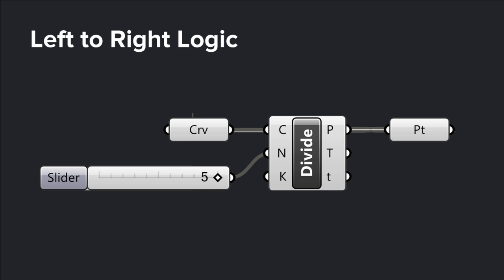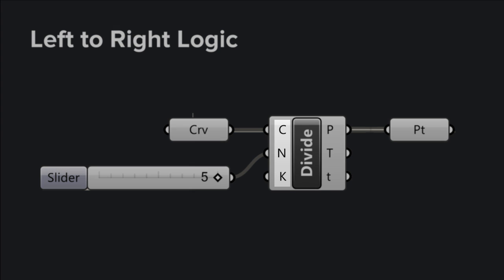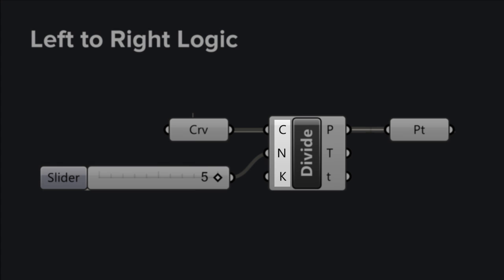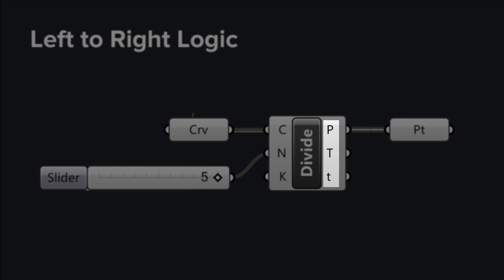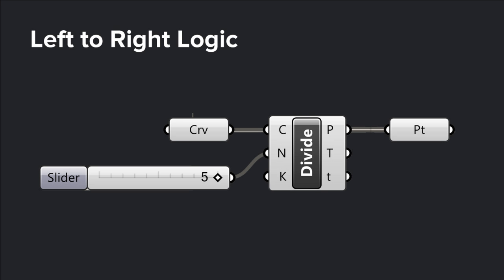Another important aspect of Grasshopper is that you always work from a left-to-right logic, which means that your parameters and components will always receive their information from the left side and return their outputs on the right side. This will make your algorithms or definitions always grow to the right side of your canvas.